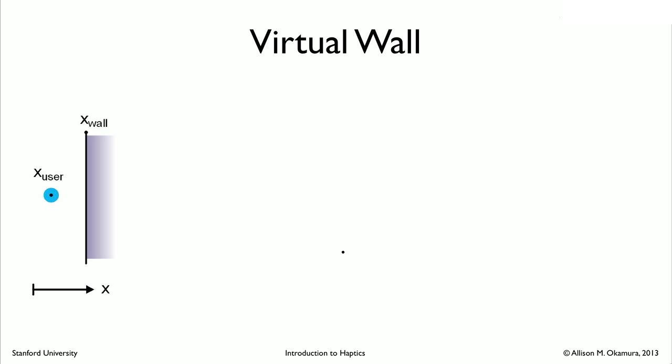So even more common than the virtual spring as a building block of virtual environments, people really like to use virtual walls. The idea being that a virtual wall is now an environment that you aren't interacting with all the time necessarily in your virtual environment. But it's a haptic object that you can encounter. So in this sketch over here, we have a user who is hanging out outside the virtual wall. And the virtual wall is infinitely deep, represented here. And then this line right here is the entry into the virtual wall.